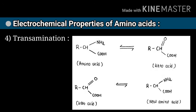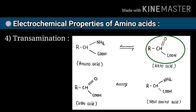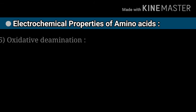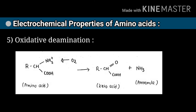Let us discuss the fourth property: transamination. The word means exchange of amino group. In this property, the amino group of amino acids is removed. You see in this reaction the NH2 amino group of amino acids is removed and a keto group takes its place, forming keto acids. This reaction is also reversible — when keto acids react with an NH2 amino group, they form new amino acids.